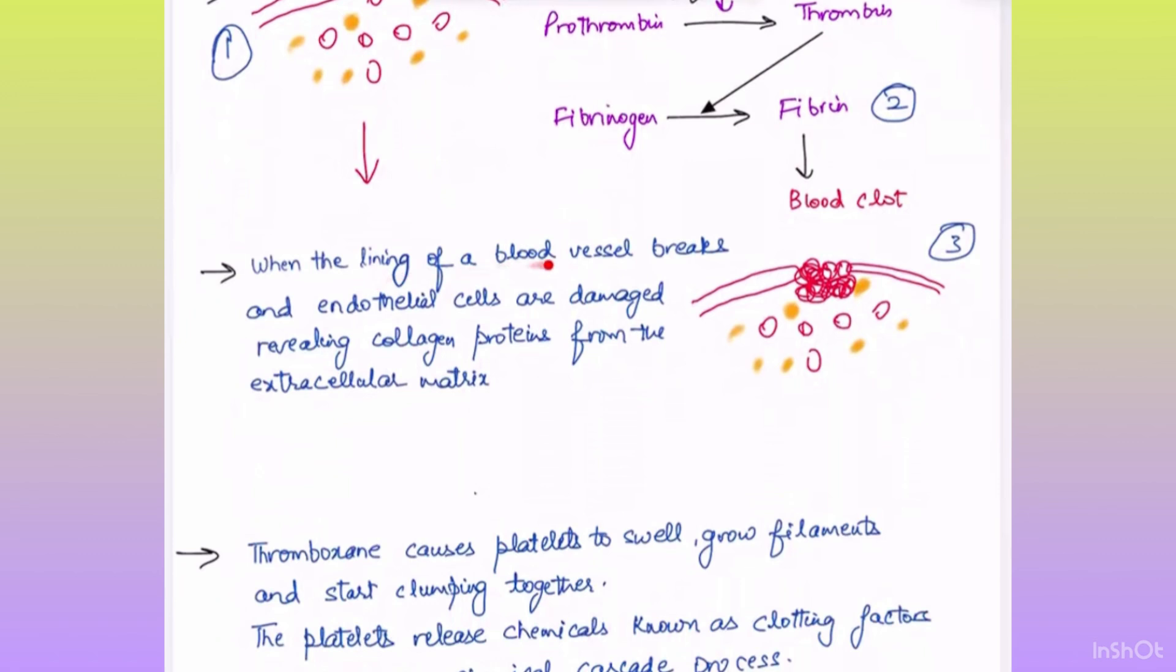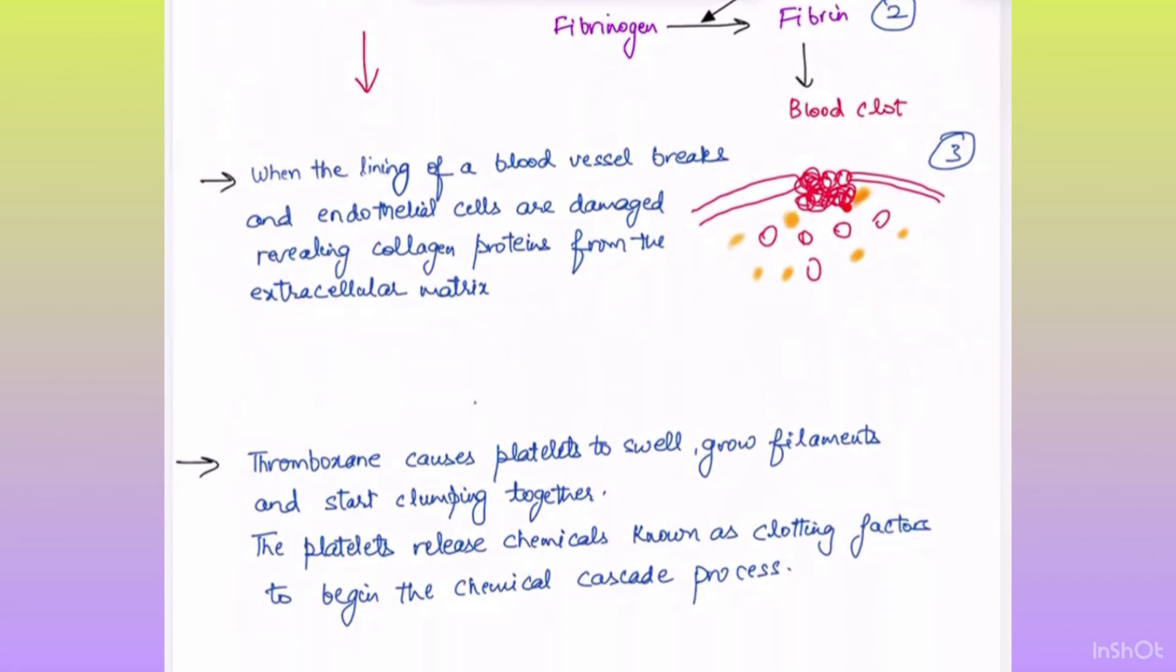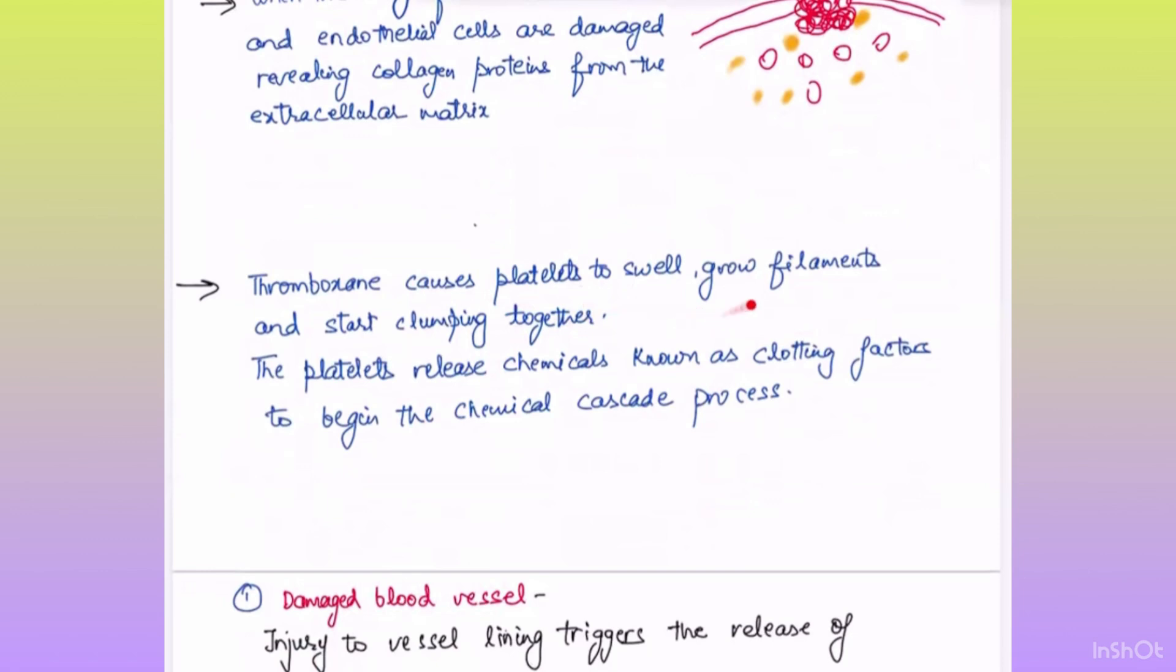When the lining of a blood vessel breaks and endothelial cells are damaged, they reveal collagen proteins from the extracellular matrix. Thromboxin causes platelets to swell, grow filaments and start clumping together.